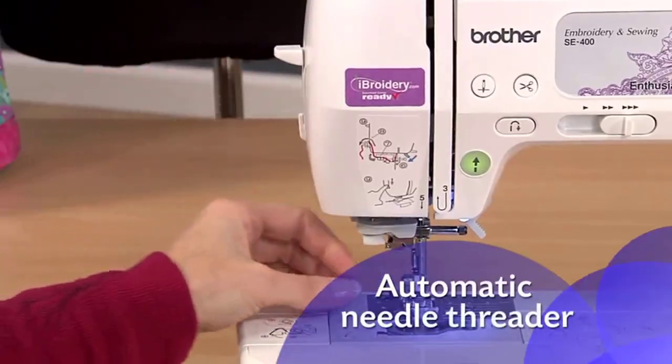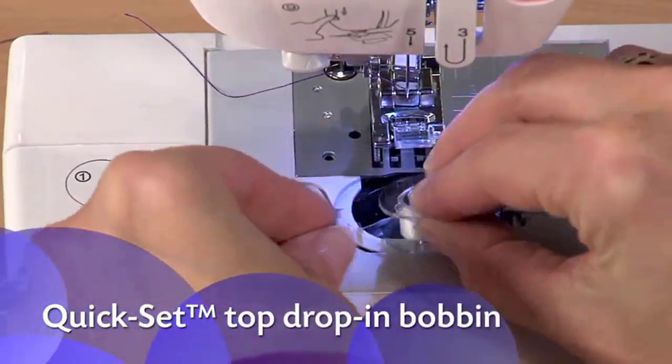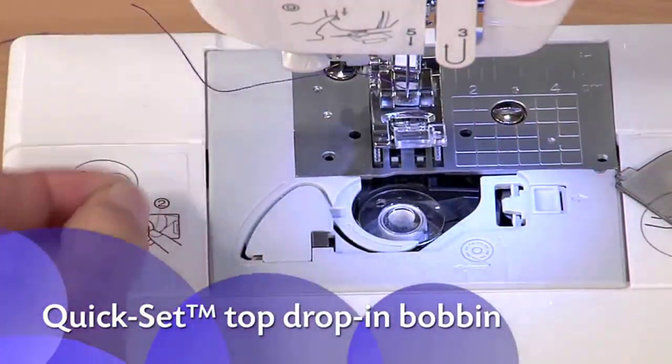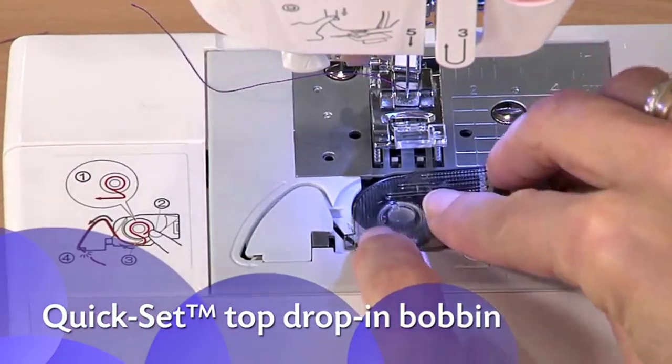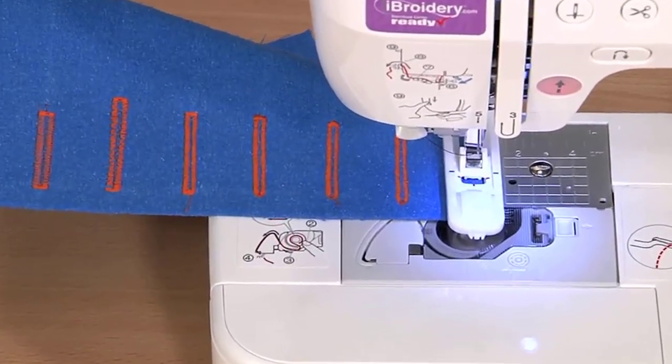Features like the automatic needle threader and quick-set top drop-in bobbin are big time and frustration savers. And the one-step buttonhole is automatically sized to fit your buttons.